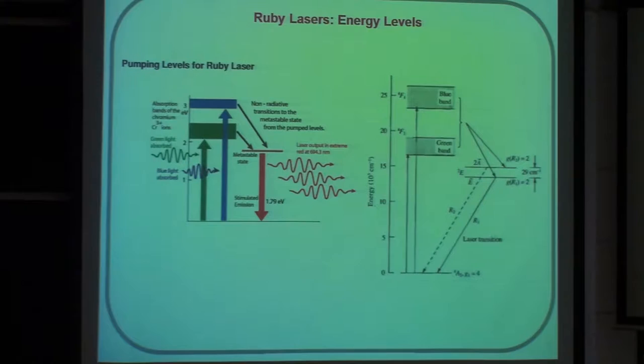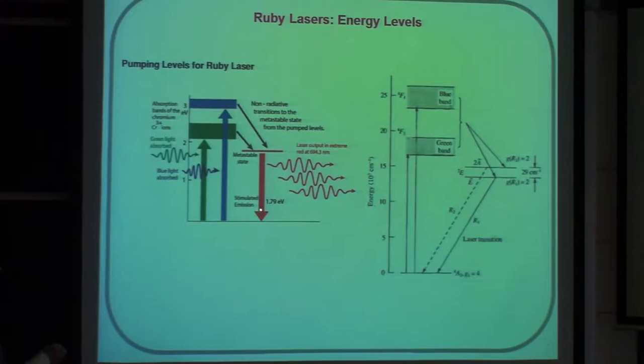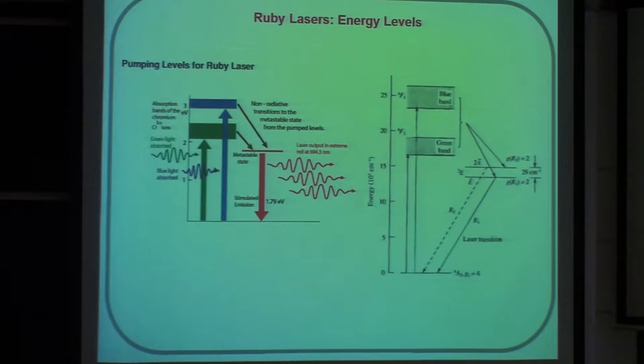Zooming in, you'll see that the lasing level is not just one level — it's actually two different energy levels very close together. Sometimes when we draw these diagrams and show one energy level, it could be a cluster of closely spaced levels. This transition is approximately 1.79 eV, or about 1.8 eV.